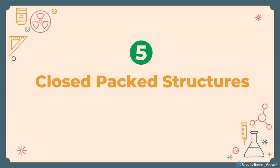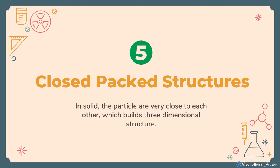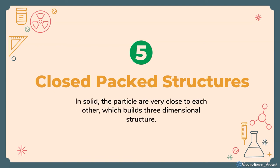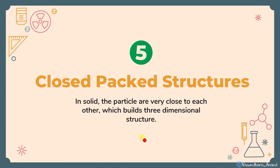Now let's start with the closed-packed structure — how this unit cell is prepared, like CCP. This is also called cubic close-packed structure. We are going to understand how the unit cells are arranged in a solid crystal. In a solid, the particles are very close to each other, building a three-dimensional structure. Before going to three-dimensional, we will learn about one-dimensional and two-dimensional packing.